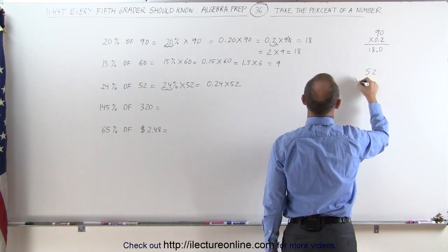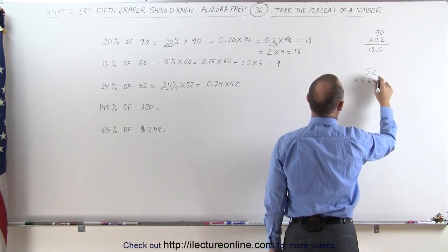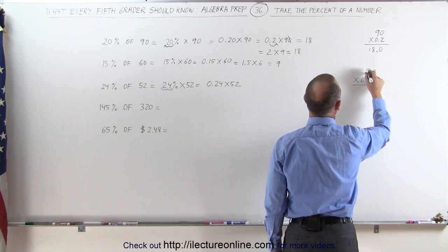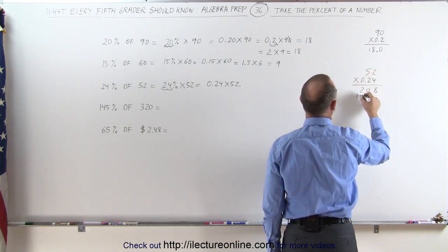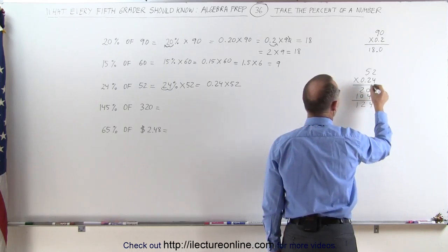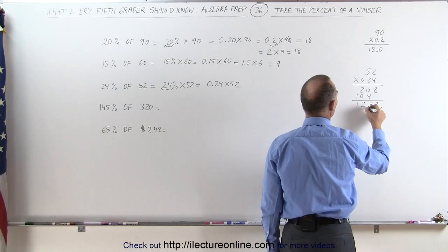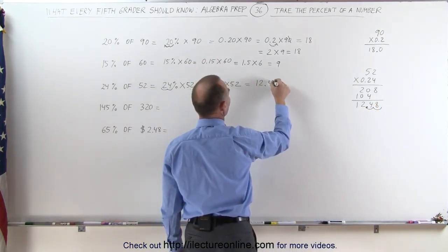Take 52 and multiply times 0.24: 4 times 2 is 8, 4 times 5 is 20, 2 times 2 is 4, 2 times 5 is 10. Add it all together: 8, 4, 2, 1. I have two decimal places—1, 2—put it right there. The answer is 12.48.